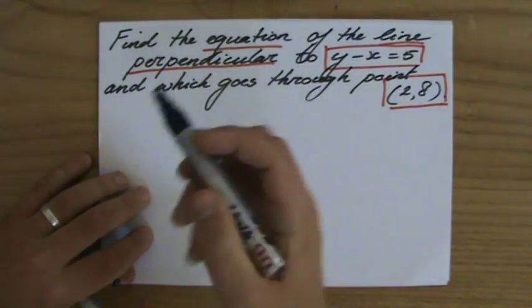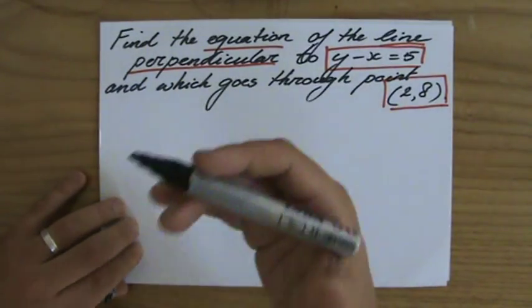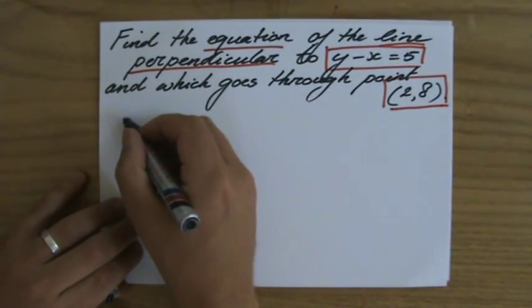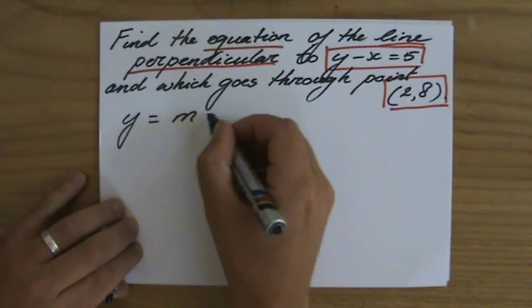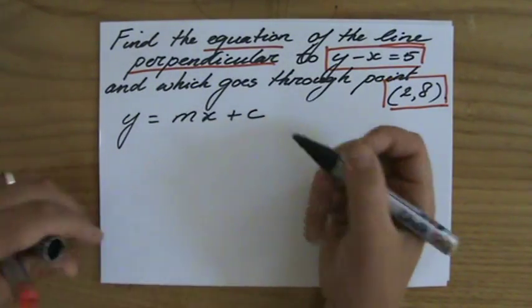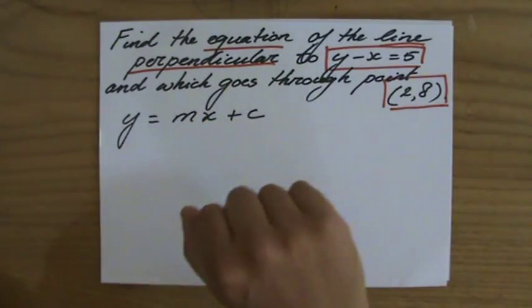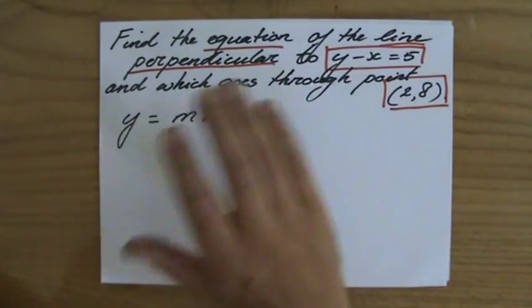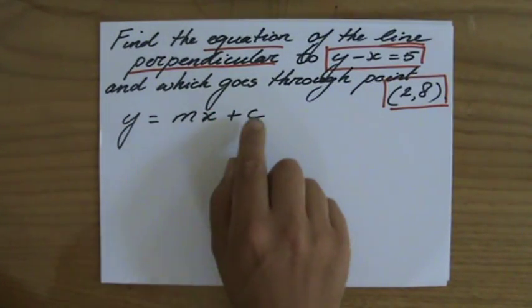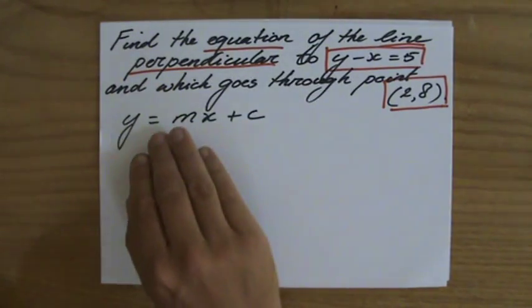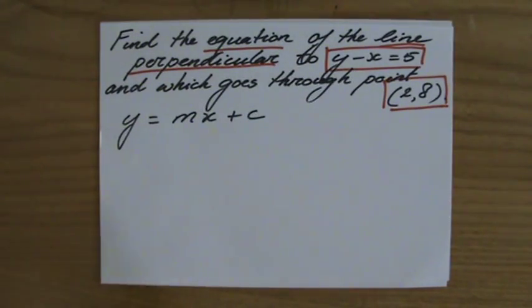I have learned the gradient intercept format, the general equation of a linear equation y equals mx plus c. Have a look at one of my previous videos where I explain this in more detail. y equals mx plus c, m is the gradient and c is the y-intercept. That's what we call the gradient intercept form.